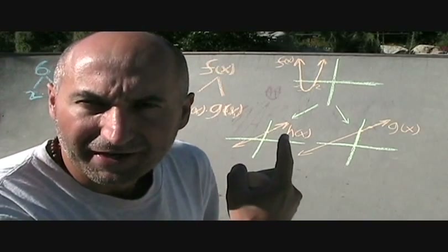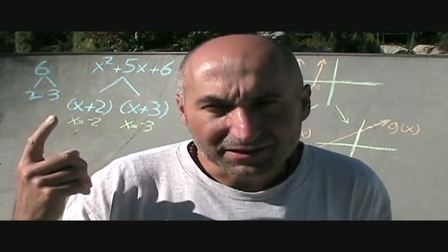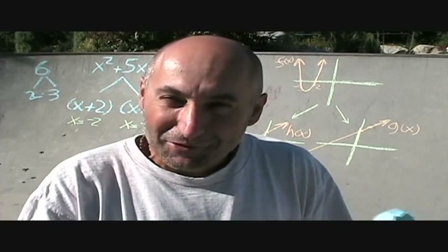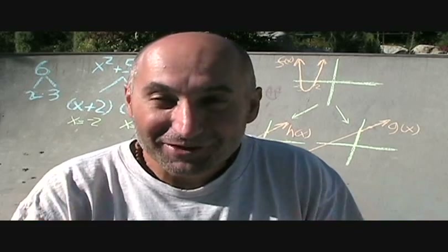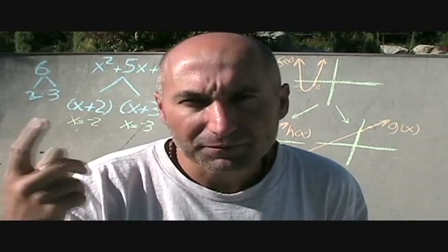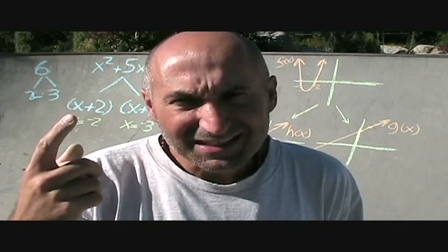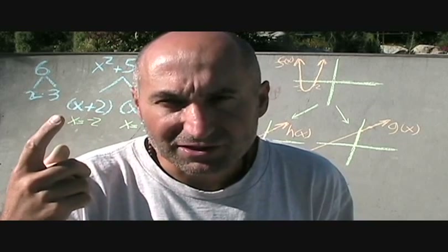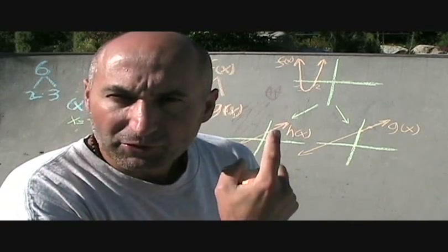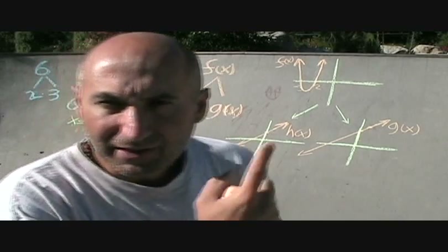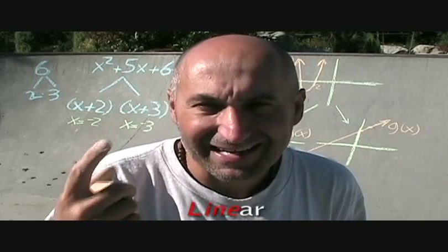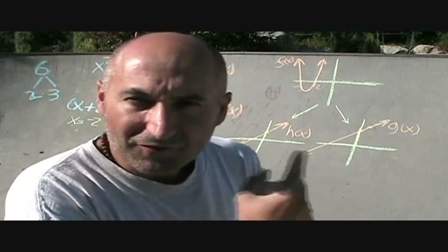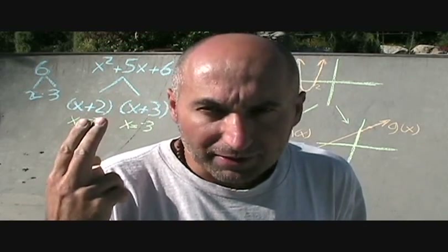Our h of x is y equals x plus 2, which is a linear function with y-intercept of 2 and a slope of 1 — you find your y-intercept and go up 1 over 1 to graph the line. Our g of x is also a linear function, y equals x plus 3, with y-intercept of 3 and a slope of 1. So if you take these two functions and multiply them together, you get the parabola.